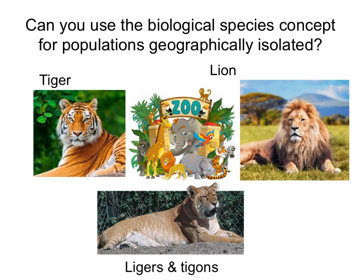Yet when put together in a zoo, tigers and lions can interbreed and produce ligers or tigons, which are reproductively viable — unlike mules. This means you cannot use the biological species concept to determine whether tigers and lions are different species, because they produce viable offspring. However, they are clearly different: tigers live mostly in forests while lions live in open savannas, and they have very different ecological needs.